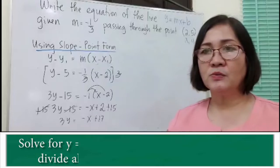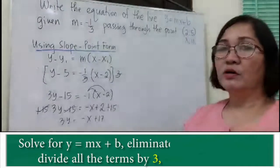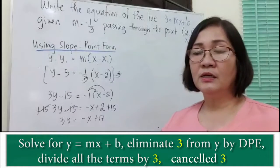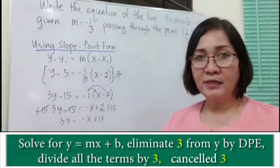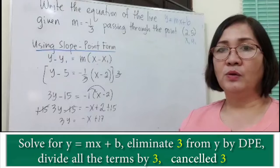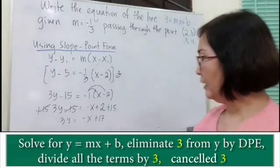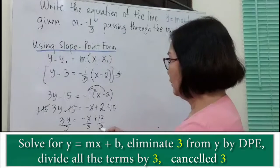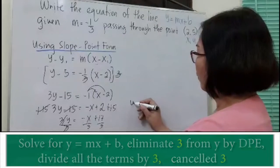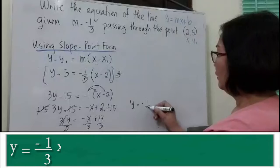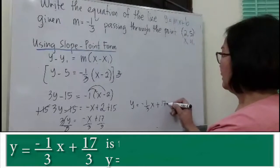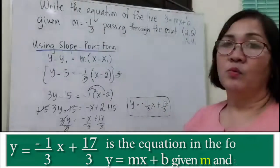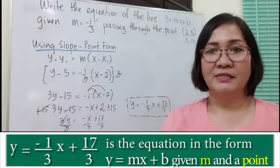Since we want the equation in the form y equals mx plus b, we divide all terms by 3 using the division property of equality. Dividing by 3: y is equal to negative one-third x plus 17 over 3. This is the equation of the line in slope-intercept form y equals mx plus b.